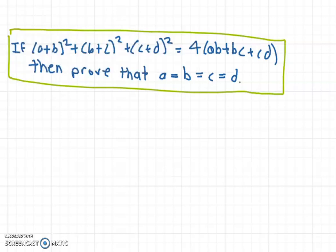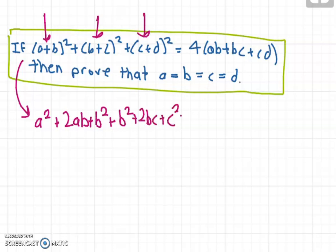So I'll start by having a look at the left hand side. What we can do is expand out each of these squares. The expansion of (a+b)² is a² + 2ab + b². And (b+c)² is b² + 2bc + c². And (c+d)² is c² + 2cd + d².